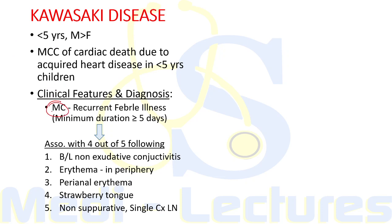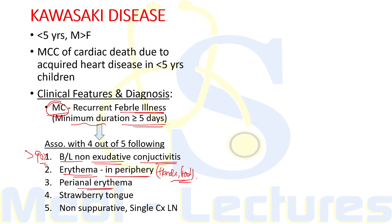The most common feature is recurrent febrile illness with fever of minimum five days duration. The American Heart Association criteria state: fever for more than or equal to five days associated with four out of five following features makes the diagnosis of Kawasaki Disease. More than 90 percent of patients show bilateral non-exudative conjunctivitis. Other features include lip erosions, cervical lymphadenopathy, rash, and peripheral erythema of hands and feet.